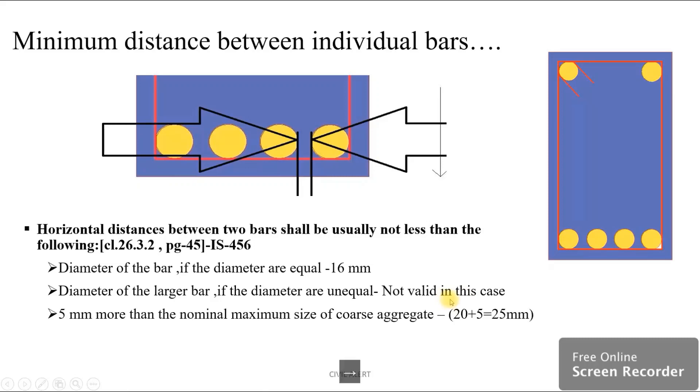Third case: 5 mm more than nominal maximum size of coarse aggregate. The nominal maximum size of coarse aggregate in this case is 20 mm, so 20 mm plus 5 equals 25 mm. We check which value is greater.